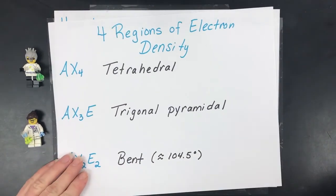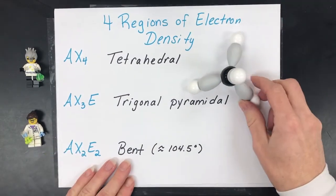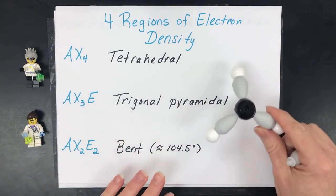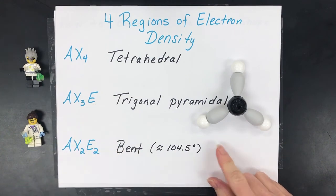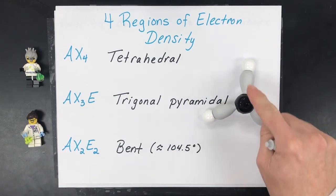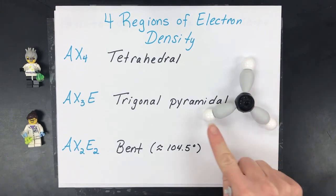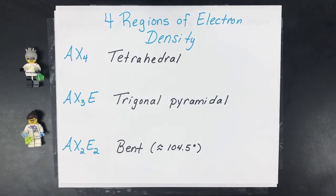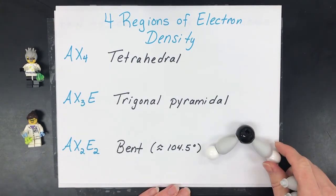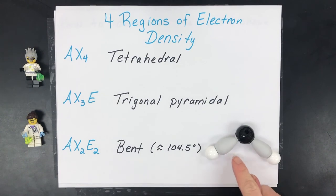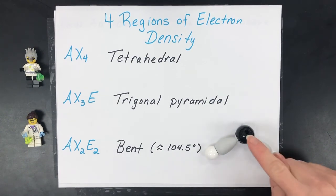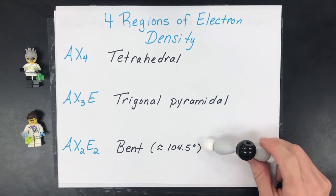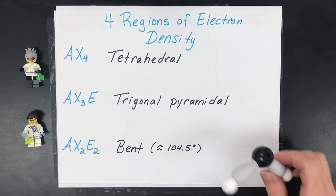If you have four regions of electron density it starts out as tetrahedral. The letter E represents a lone pair and X means bonded. With three bonded and one lone pair the shape changes, and the last configuration for four regions is bent — about 104.5 degrees — where the center atom is bonded to two atoms and has two lone pairs. That's called AX2E2.